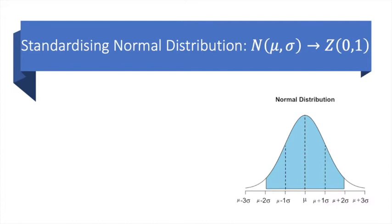Normal distributions are infinitely many with different means and standard deviations. However, we can easily convert any normal distribution into one with a mean of zero and standard deviation of one.